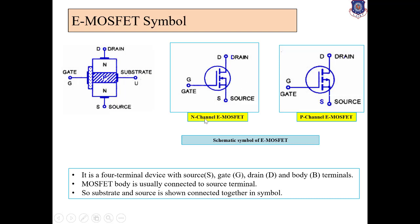Look at this symbol. This is N-channel E-MOSFET and this is P-channel E-MOSFET. The only difference between the symbols is the direction of the arrow on the source terminal. This is the direction of the arrow inside the symbol — we can say this is the direction of the arrow on the source terminal, which is outside of the symbol. Here is the proper symbol of N-channel E-MOSFET with the inside direction of the arrow on the source terminal.